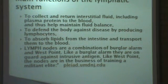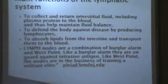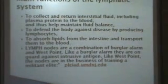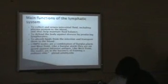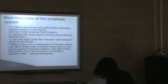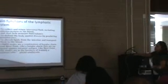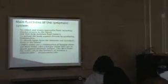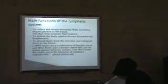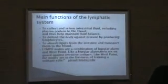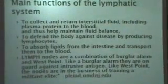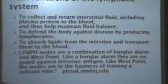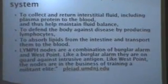Here's a quote I found that actually made a lot of sense: 'Lymph nodes are a combination of a burglar alarm and West Point. Like a burglar alarm, they're on guard against intrusive antigens. But like West Point, the nodes are in the business of training the militant elite.' Because they form those cells and then let them go to do what they're supposed to do.